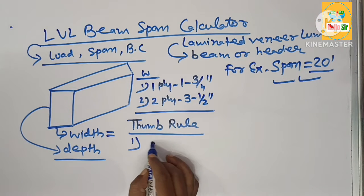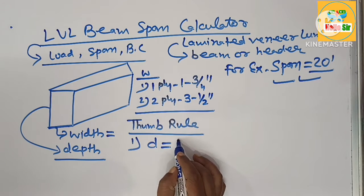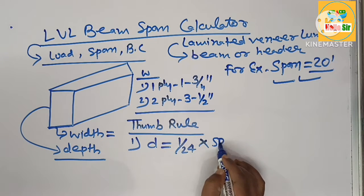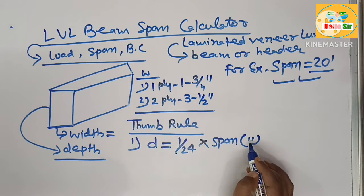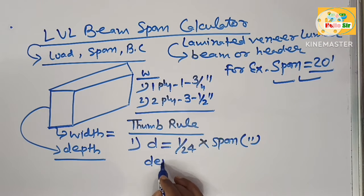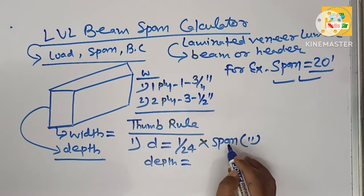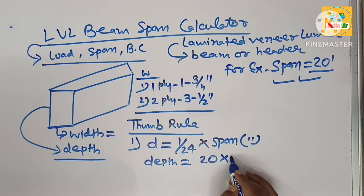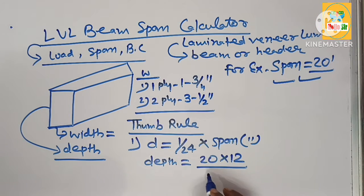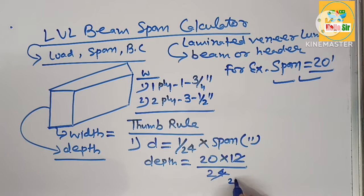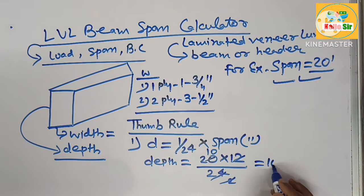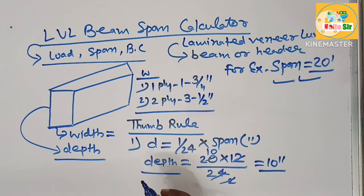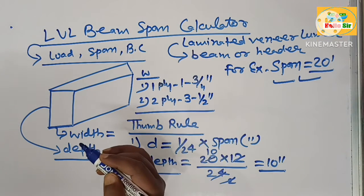The depth of the LVL beam size needs to be 1/24th of the span length in inches. The depth should be 20 feet converted to inches, so multiply by 12 and divide by 24. This comes to about 10 inches. This is the nominal depth of LVL beam required to span 20 feet.